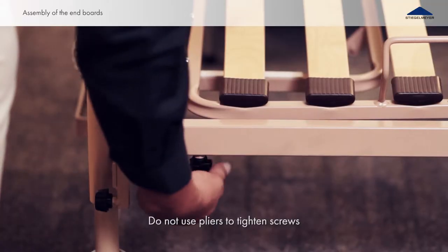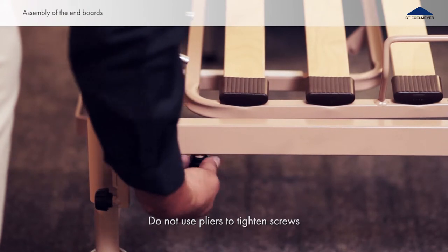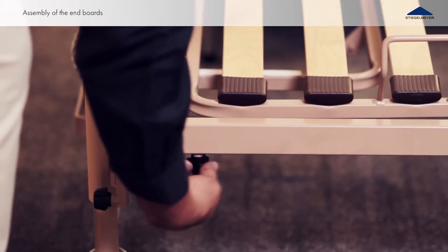Tighten the four knurled screws. Repeat this process at the foot section end board as well.